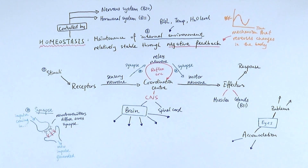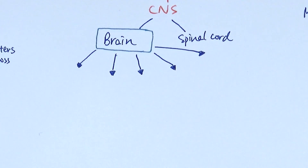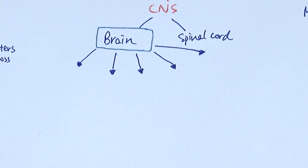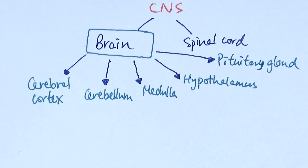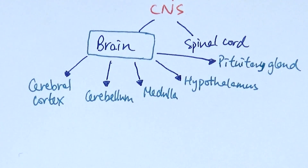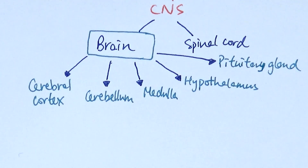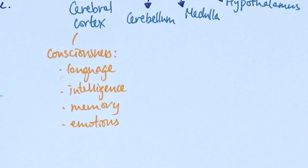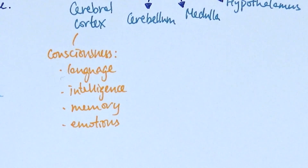For the combined course, that's essentially all you need for chapter 10. If you're doing the separate course, you need to know a little more about the brain and the eyes. The brain can be separated into five major structures: the cerebral cortex, the cerebellum, the medulla, the hypothalamus, and the pituitary gland. The cerebral cortex is the main, large structure — the classic brain shape you see in diagrams — and is responsible for all conscious actions including language, intelligence, thinking, reasoning, memory, and emotions.